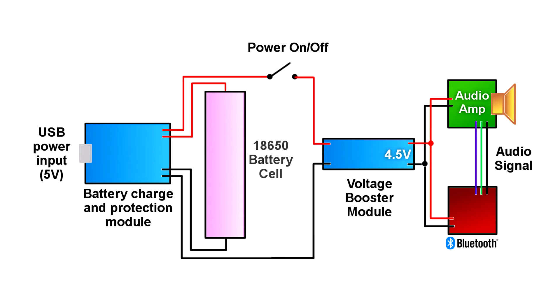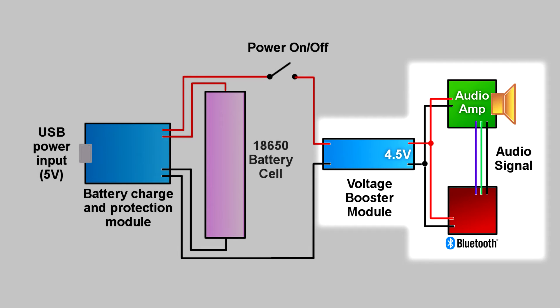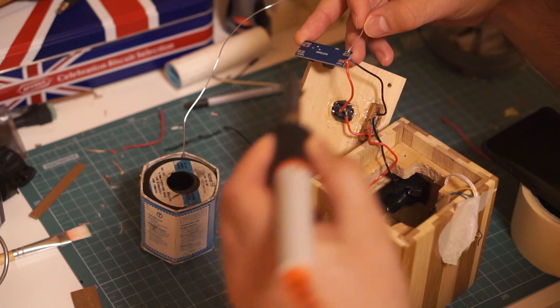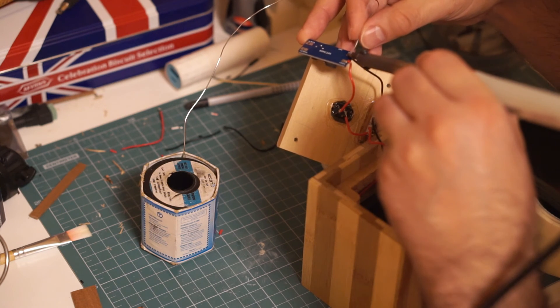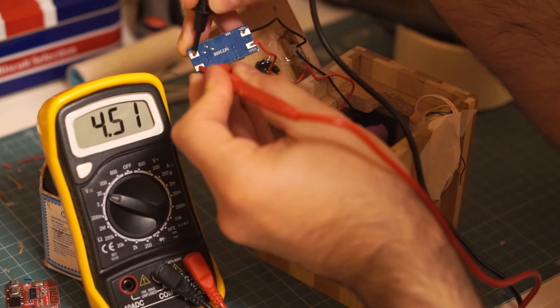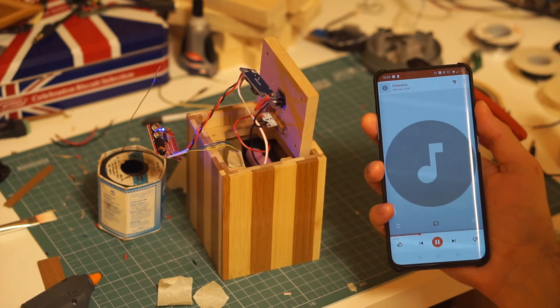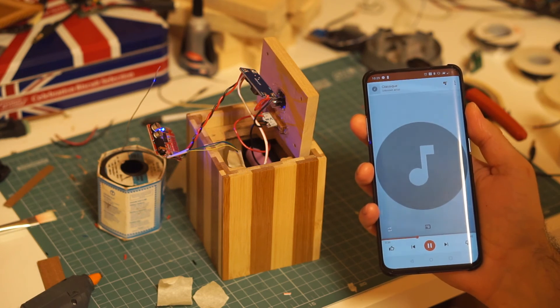All that was left to do was to wire up all the electronics. To give you a better idea of how everything is connected, here is a schematic. The battery charging module is connected to the battery and provides power to a voltage booster. The voltage booster sends a constant 4.5V supply to the Bluetooth receiver and to the power amplifier. I then proceeded with wiring everything together according to the provided schematic. I also made sure that the voltage booster is set to the required 4.5V. Just to be safe, I gave the circuit one more test before closing the speaker and thankfully, it worked as expected.